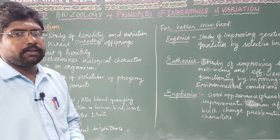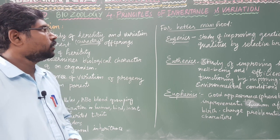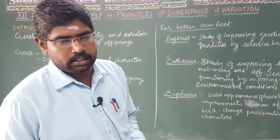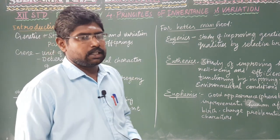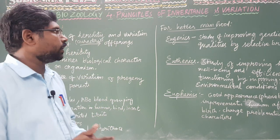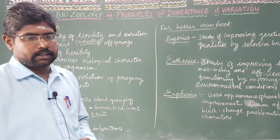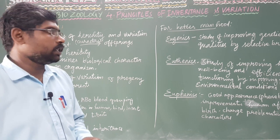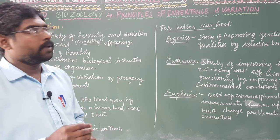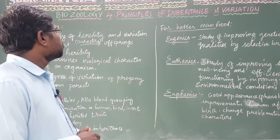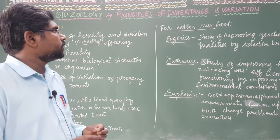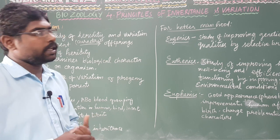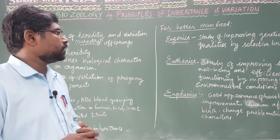Then what about variation? The individuals — offspring or progeny — from the parents are not similar in character to the parents. They are somewhat different from the parents. That difference is called variation. So what are the principles in Inheritance and Variation? You can see through this chapter.